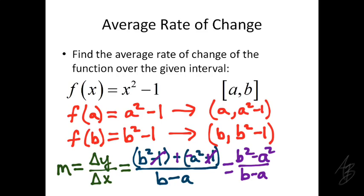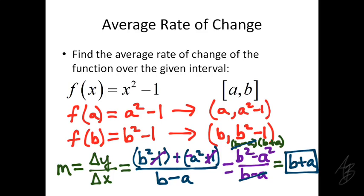We could stop here, but there's something we can simplify. Using the difference of squares, we can factor b squared minus a squared as (b minus a)(b plus a). We have the factor (b minus a) on top and in the denominator. Making the assumption that a is not equal to b, we can cancel those out — dividing top and bottom by (b minus a) — and that simplifies to b plus a as our final answer. This assumption is important: if a equals b, we'd be dividing by zero, which is undefined. So over the interval from a to b, assuming a and b are not the same point, the average rate of change is b plus a.